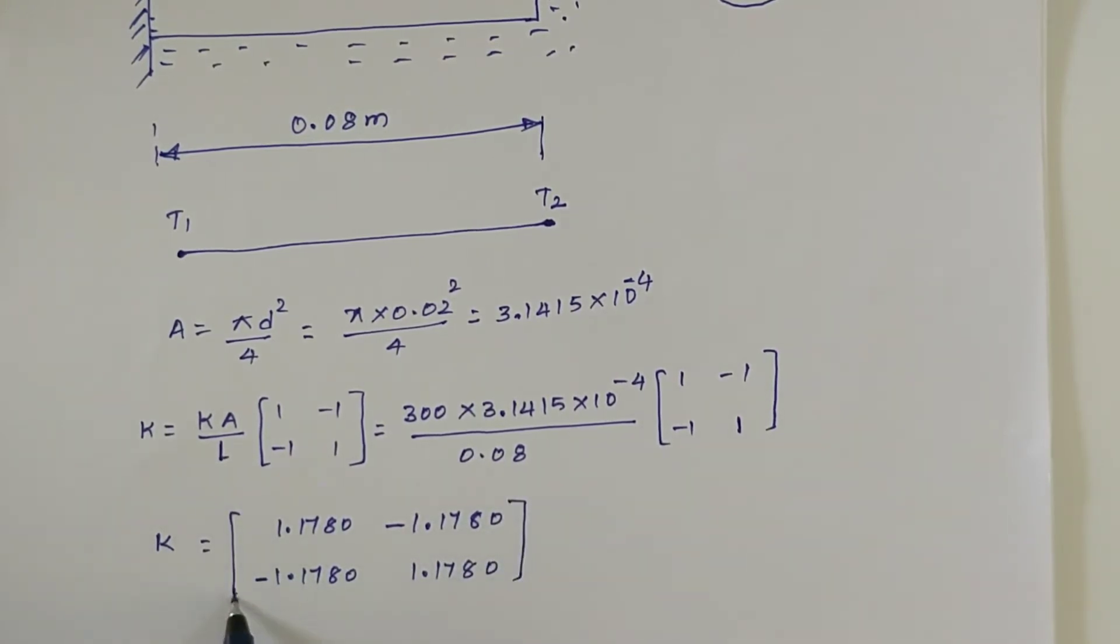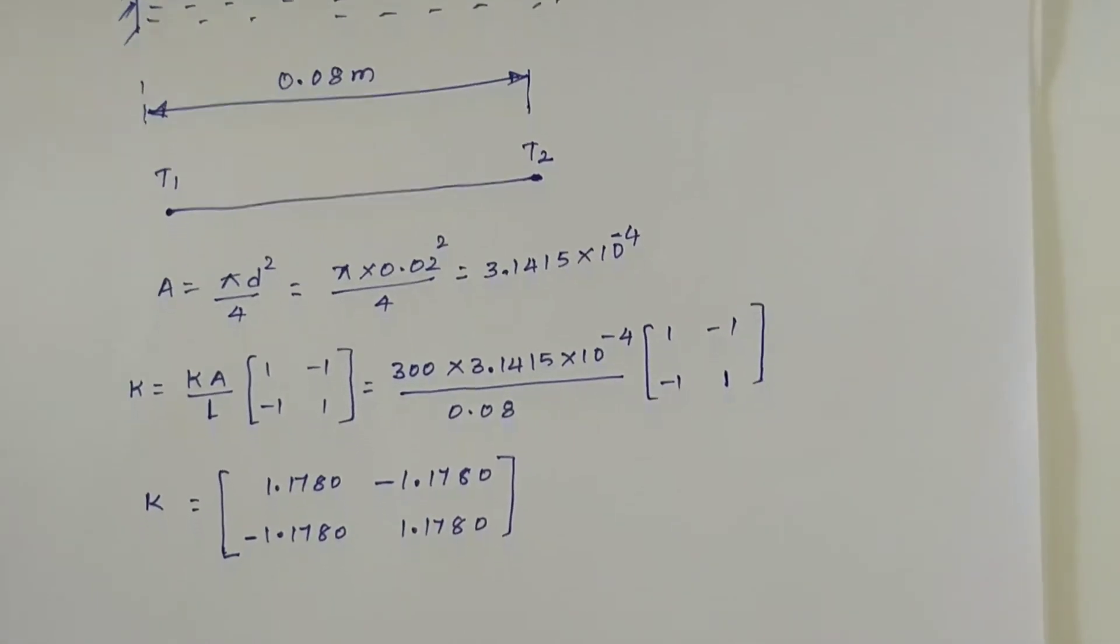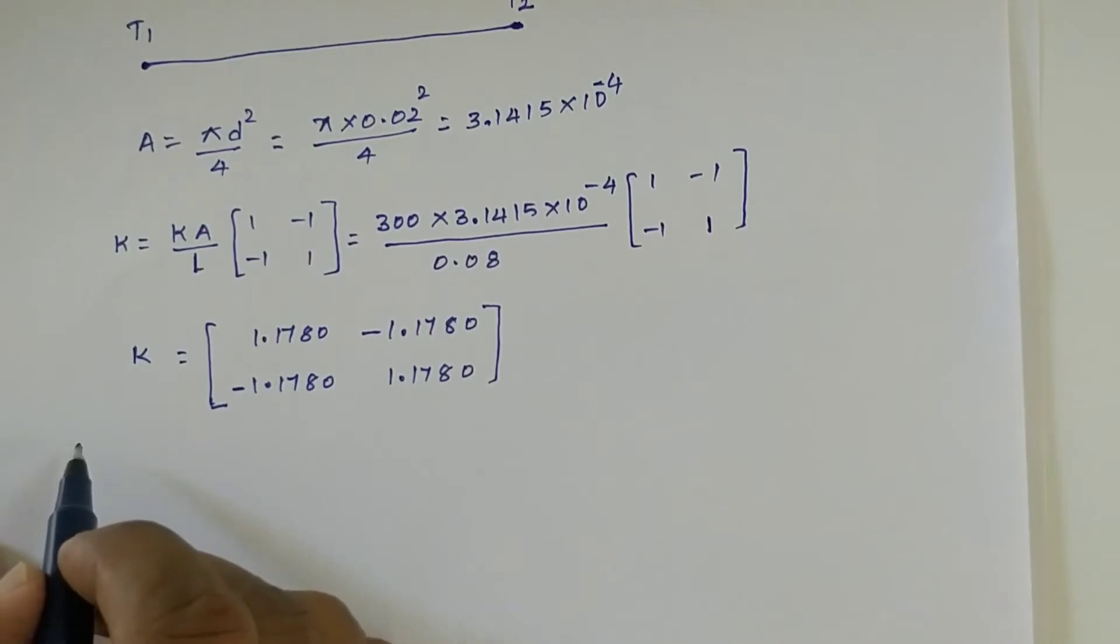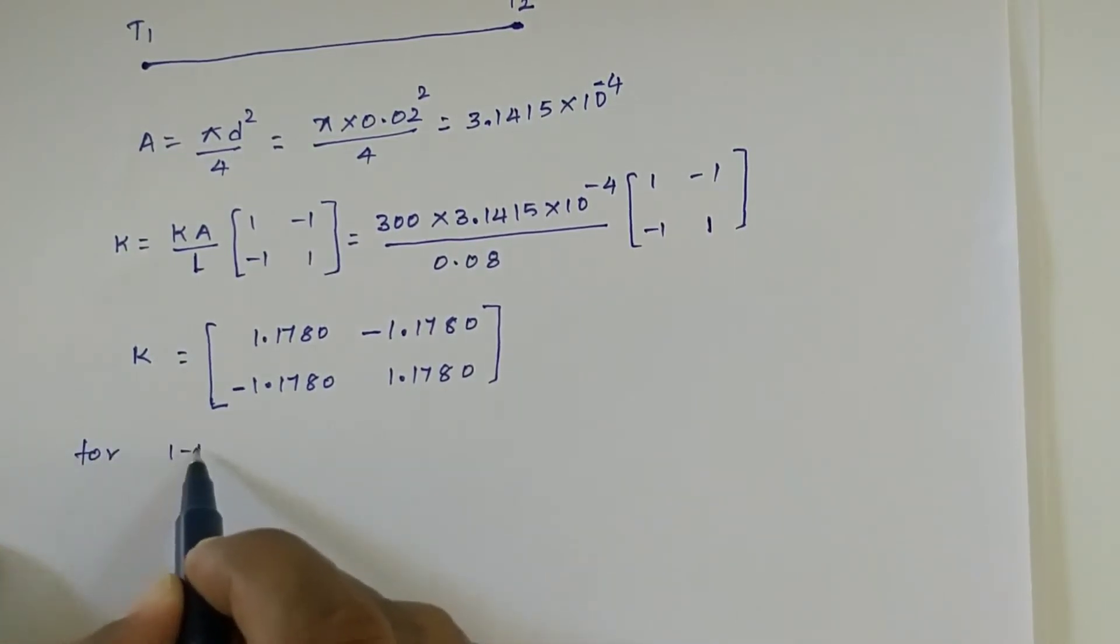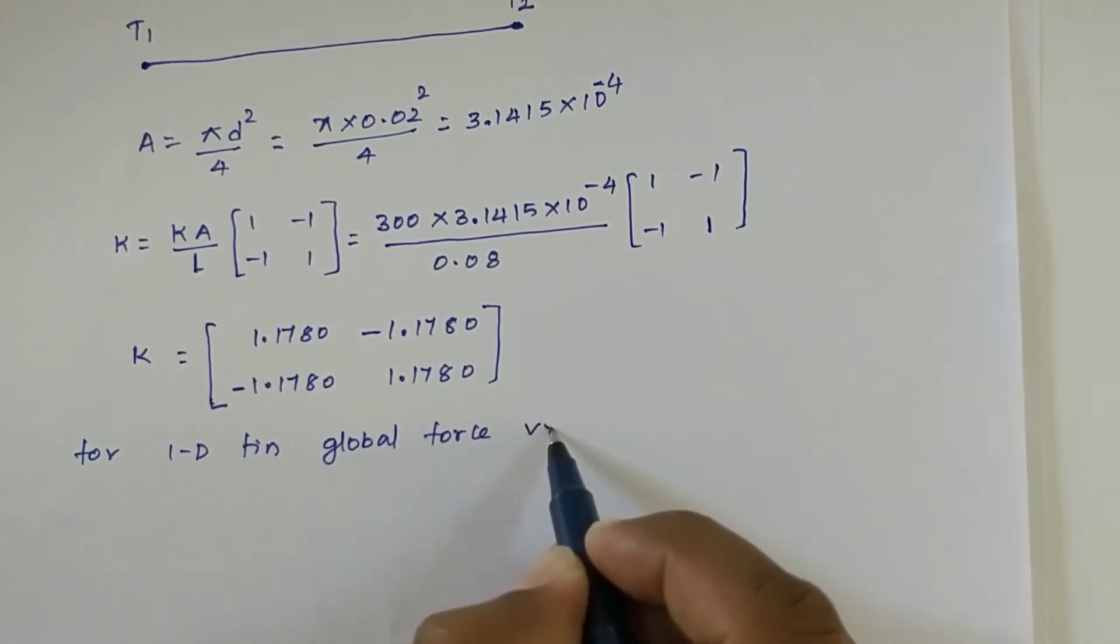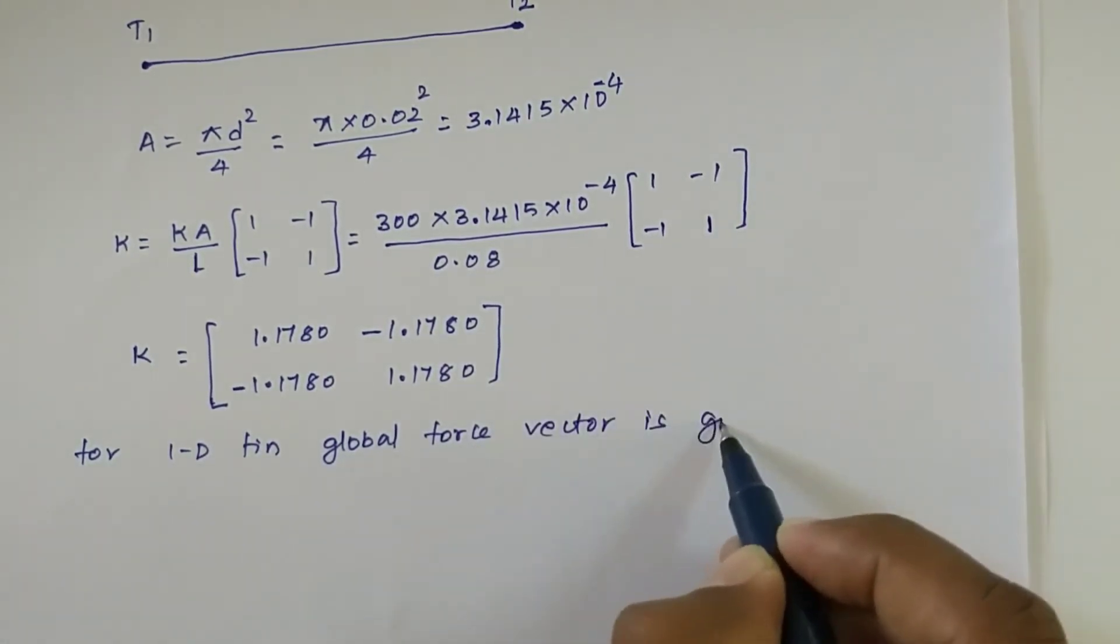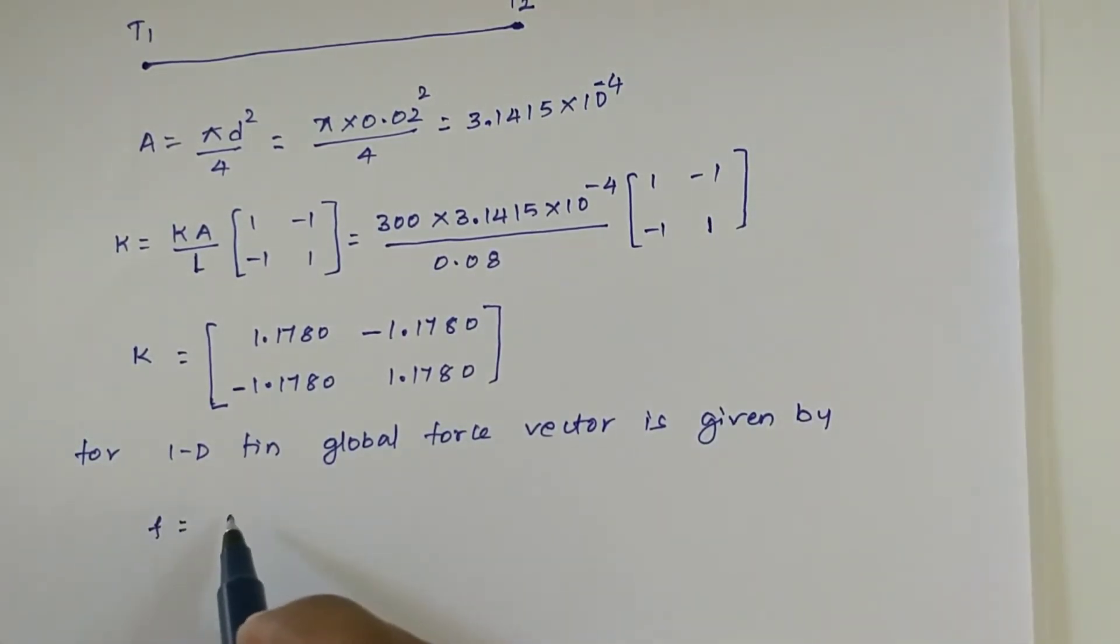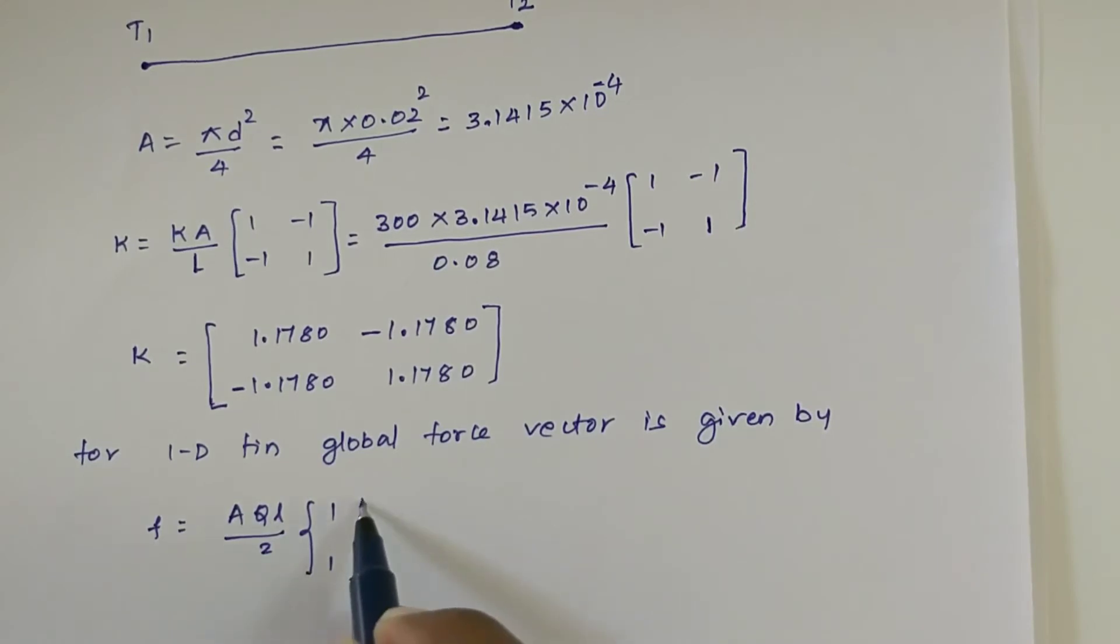Since for a one-dimensional fin, global force vector is given by F equals A Q L divided by 2, times [1; 1]. This is the matrix used to find out global force vector for a one-dimensional fin.